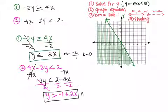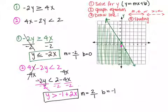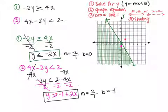Looking at this equation, my intercept is at negative 1 and my slope is 2, or 2 over 1. So when I graph this, I go to negative 1 on the y-axis because that's my intercept, and then up 2 and over 1 to the right because that's my slope. Now, do I use a dash or a solid line? Looking at this inequality, I have to draw a dash line and connect the dots.